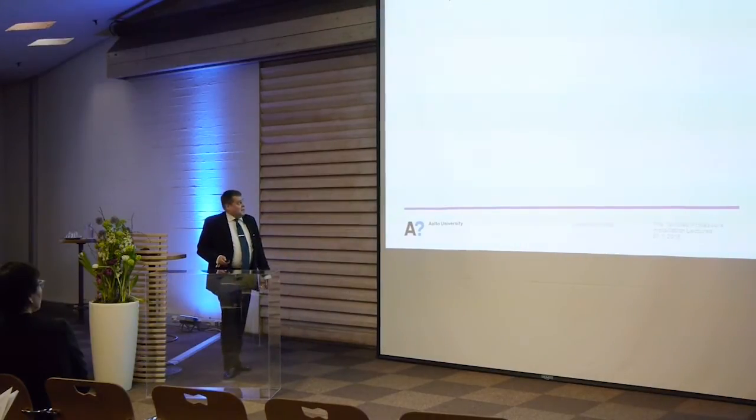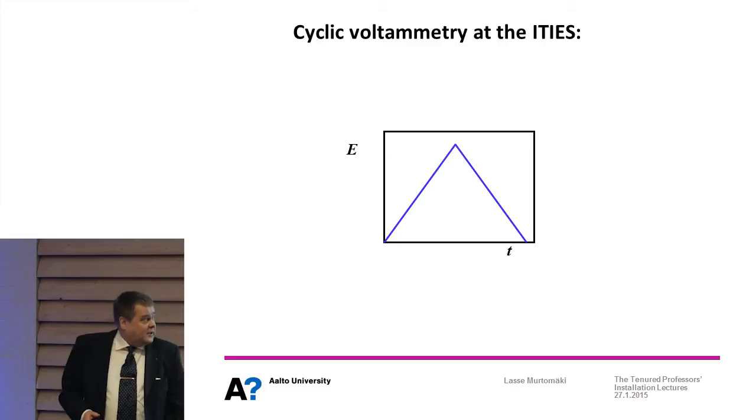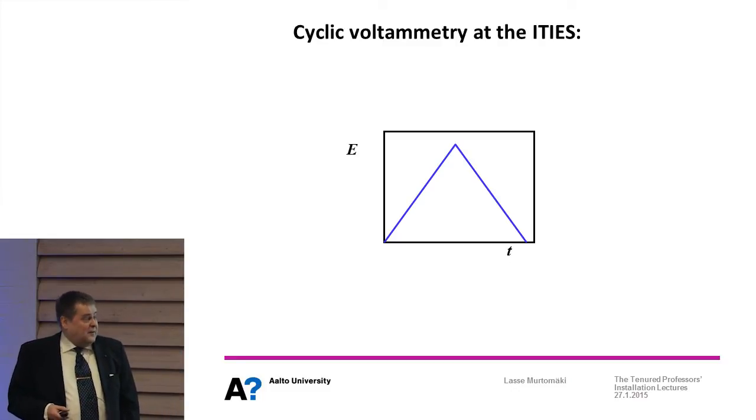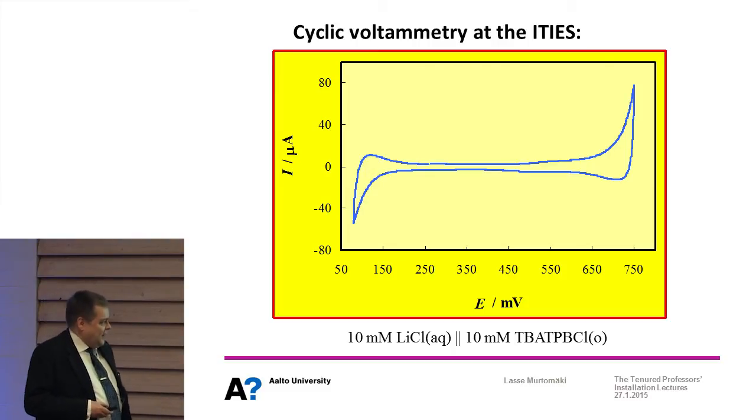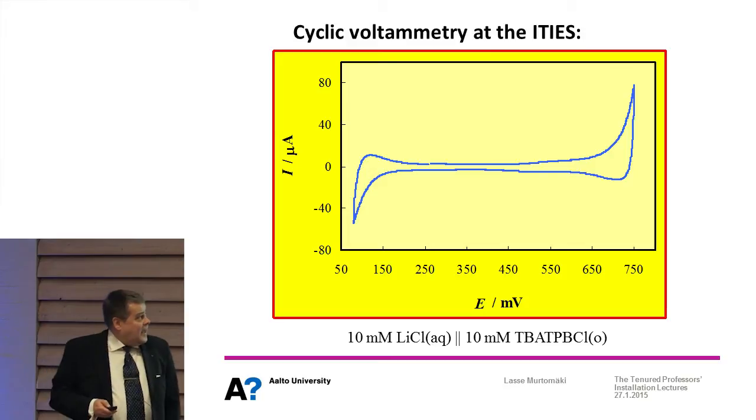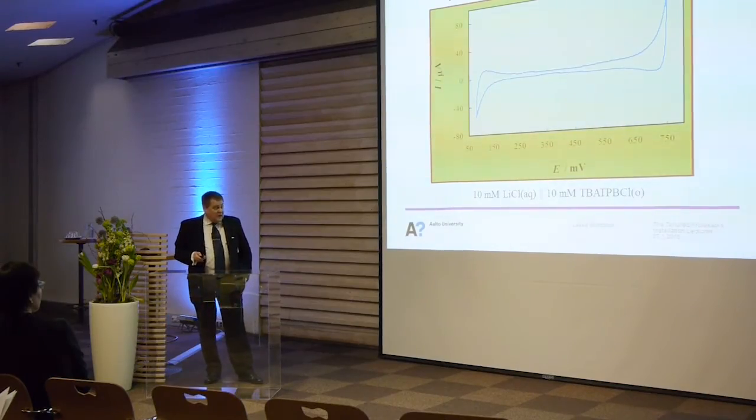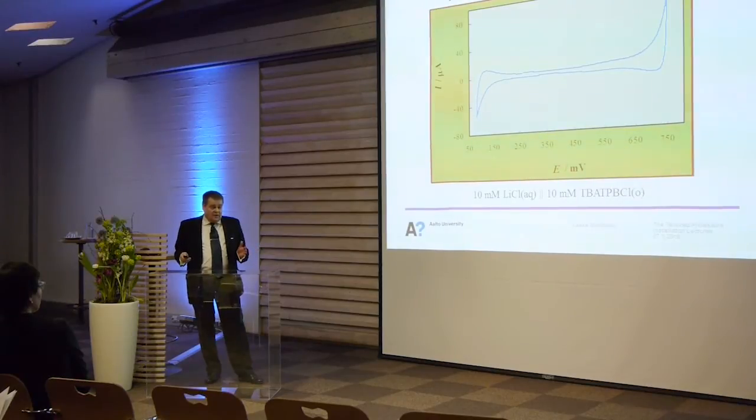If we do standard electrochemical experiment called cyclic voltammetry, we polarize the interfacial potential drop with this triangular wave of the order of 50 millivolts per second. We get a picture like this - this is a real measurement of my own from 20 years ago. If we have lithium chloride in the aqueous phase and tetrabutylammonium tetrachlorophenylborate electrolyte in the oil phase, which is dichloroethane by the way, we got this kind of voltammogram - a large window with no faradic current taking place.